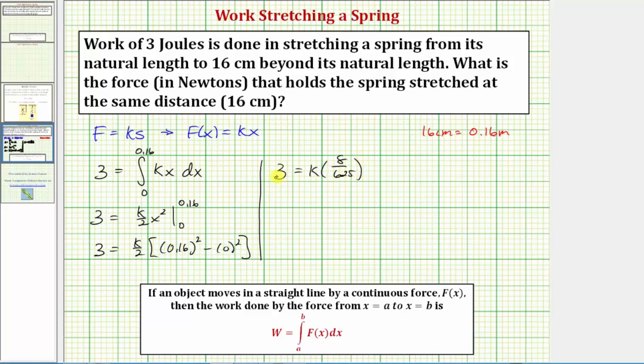Solving for k, we'd multiply both sides by the reciprocal of this fraction. So we'd have three times 625 divided by eight equals k. So the spring constant k is equal to this product, which comes out to 1,875 all over eight.